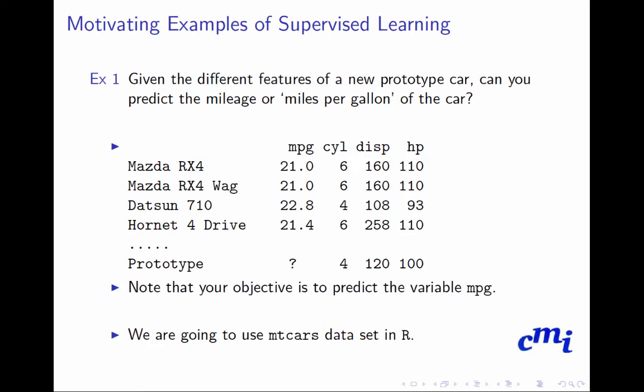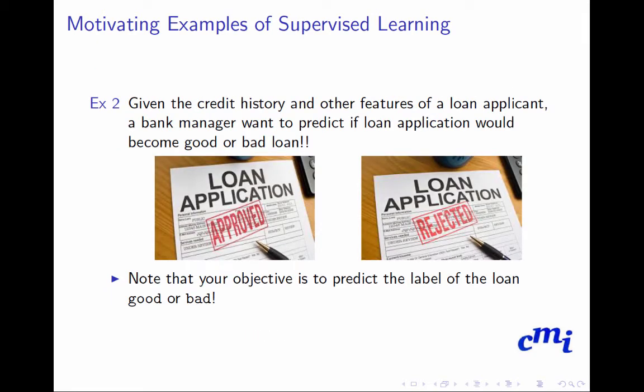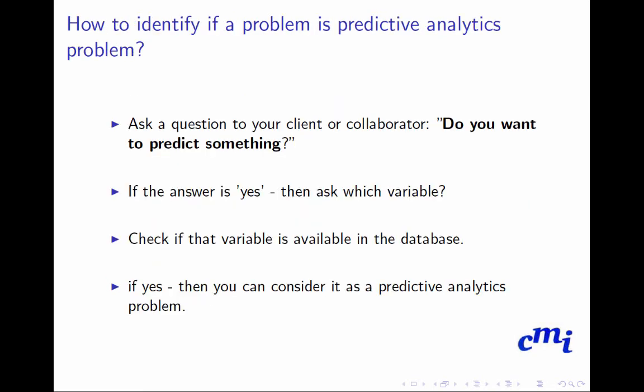Another example which you can often face: given a credit history and other features of a loan applicant, a bank manager wants to predict if the loan application would result in a good loan or bad loan. If it is a good loan, then you would like to have the business, but if it is a bad loan, it could be a huge loss for the bank. You have to make a binary decision whether to approve the loan or reject the loan. This also comes under supervised learning technique.